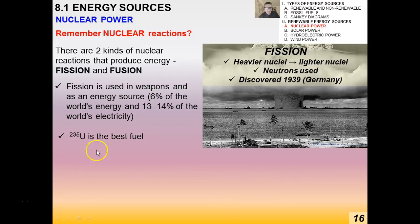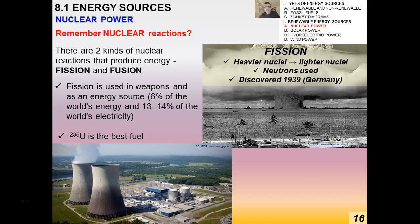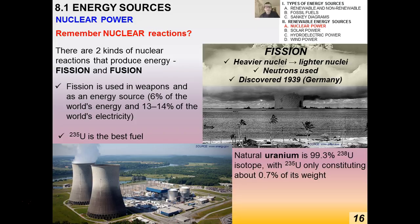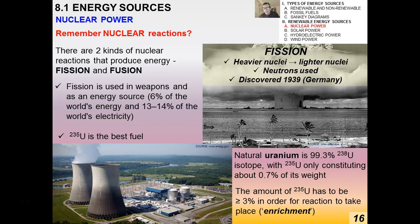Uranium-235 is the best fuel — in fact, it is the only isotope of uranium that reacts appropriately with neutrons bombarding it to start a chain reaction. The problem is that natural uranium is almost completely uranium-238. Uranium-235 only constitutes less than 1% of its weight. So we have to undergo a process called enrichment to increase the percentage of uranium-235 to generally greater than or equal to about 3%.